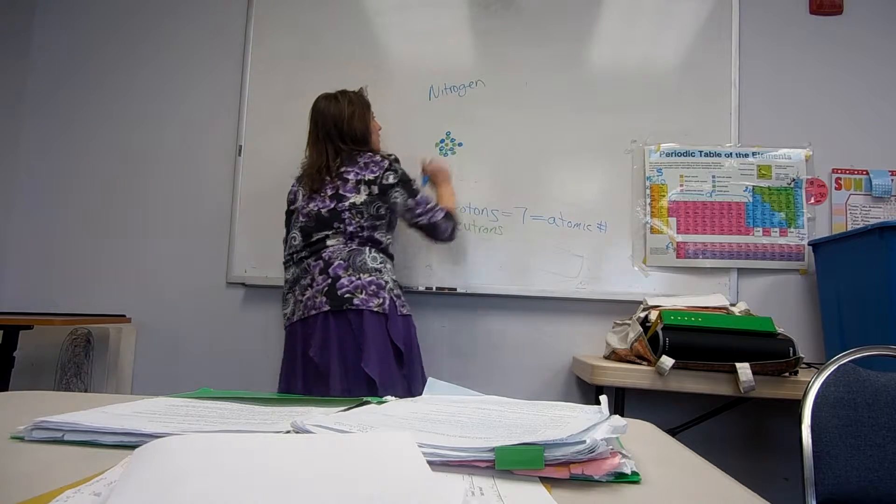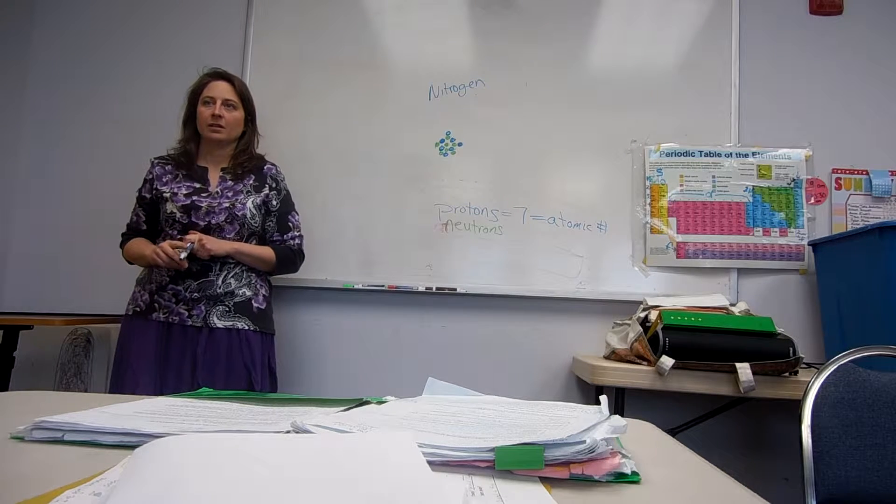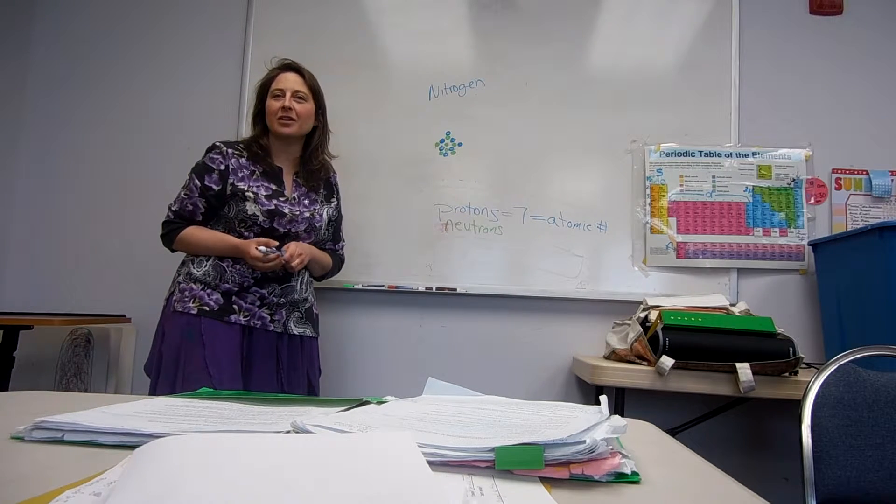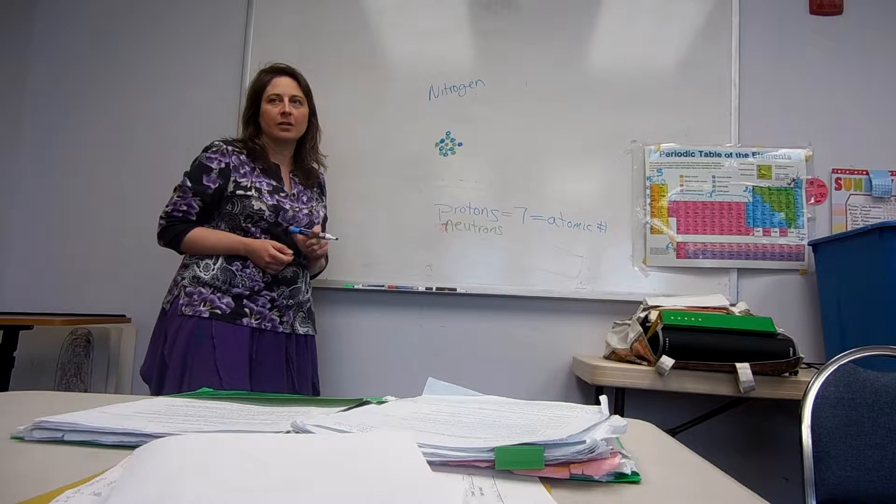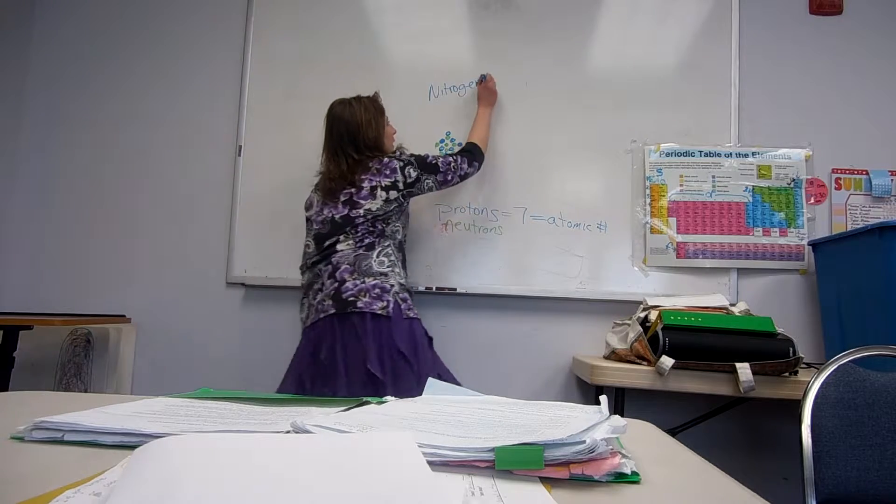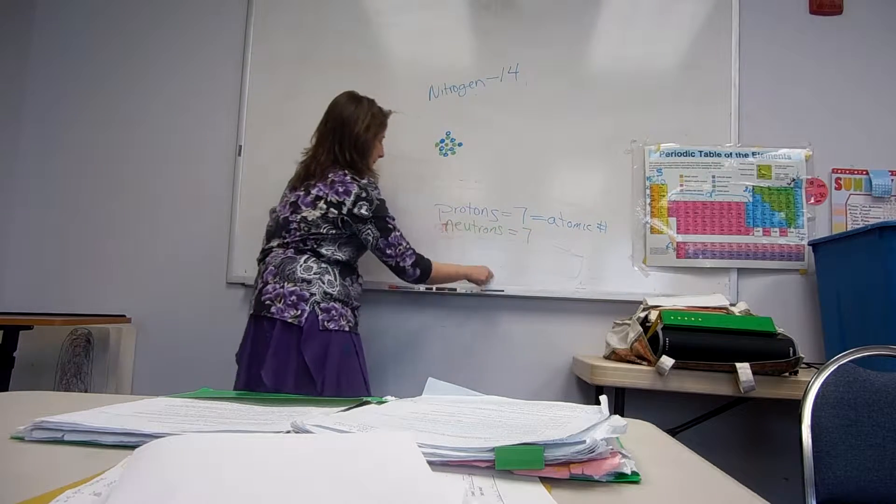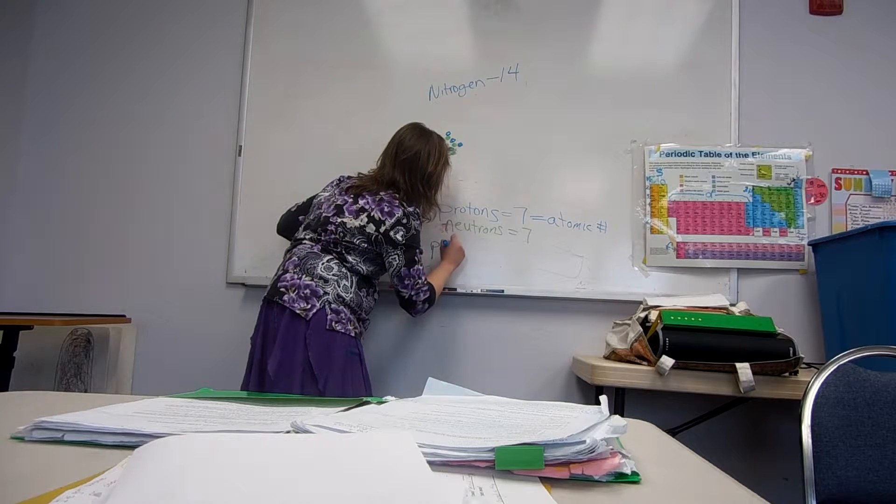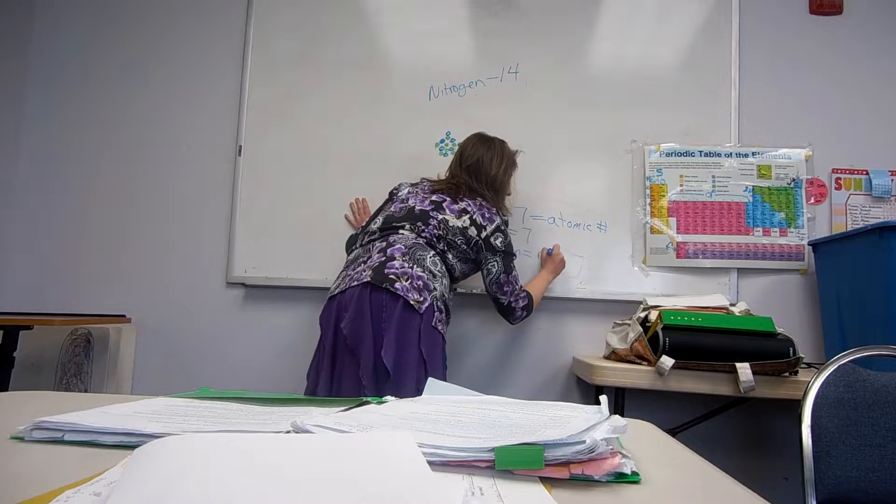What isotope of nitrogen do we have? Chris? Yeah, I'm sorry. Can you see that far? I don't know how hard it is to see from back there. So, that would be nitrogen 14. Nitrogen 14. Yeah. And how did you know that? Yes. Because they had a mass number of 14. Okay. So, let's see. Proton plus neutron equals the mass number.